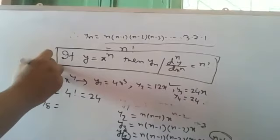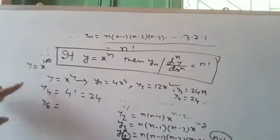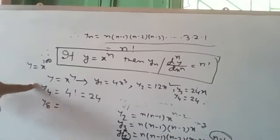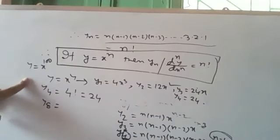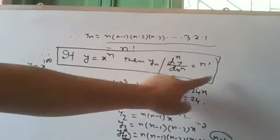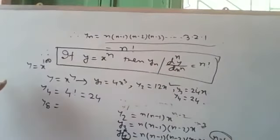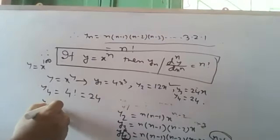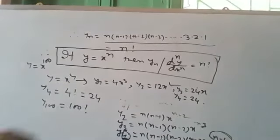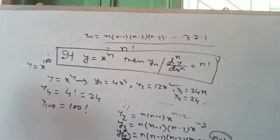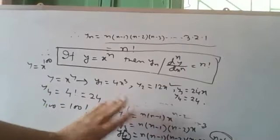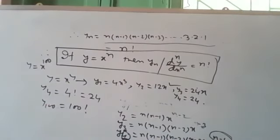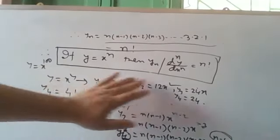Using this formula, if we need a very high-order derivative such as y100, we do not need to differentiate step by step 1, 2, 3, 4, 5... one hundred times. We have a formula for this. For example, if y is equal to x to the power 100, then y100 is equal to 100 factorial.